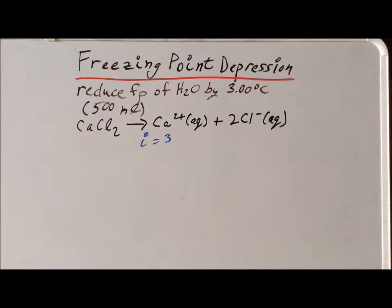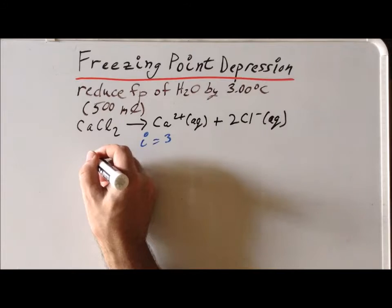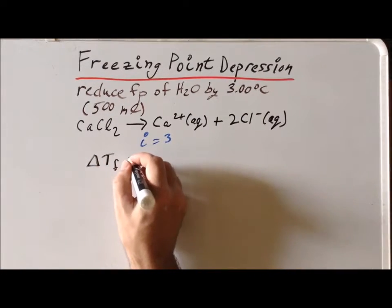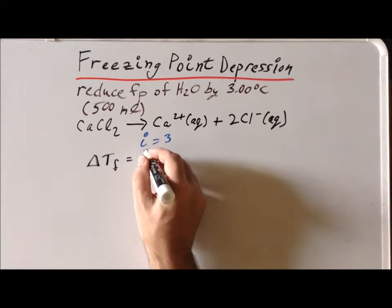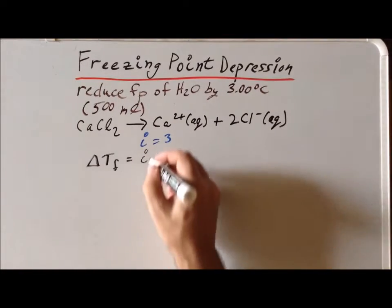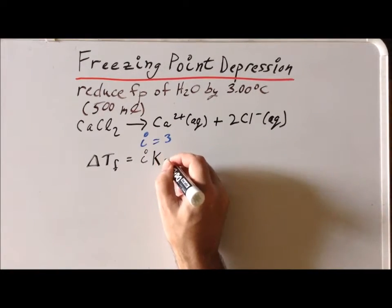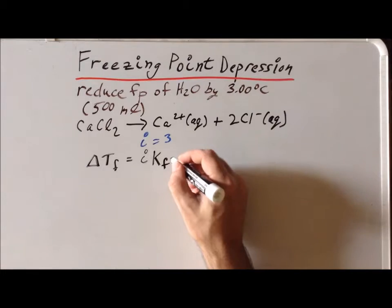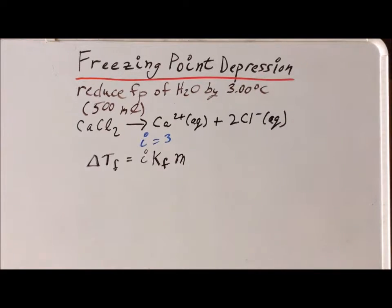We need to use our formula, which is that the change in the freezing point is going to be equal to i, this Van't Hoff factor, times the cryoscopic constant k sub f, or the freezing point depression constant, times m, where m is the molality of the ultimate solution.